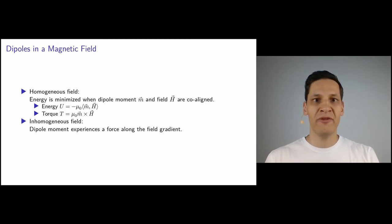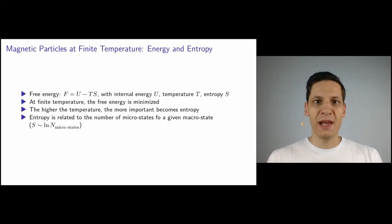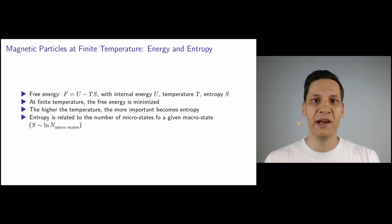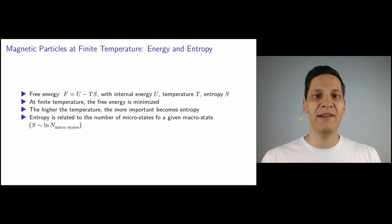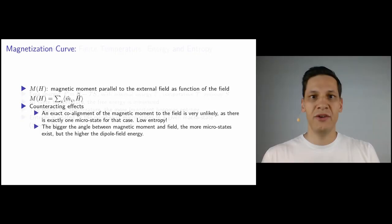Up to this point we have really neglected temperature in the system, so let's see what happens at finite temperature. Thermodynamics gives us that the free energy of a system is given by the internal energy minus the temperature times the entropy. At finite temperature, this free energy term is minimized. With increasing temperature, the entropy S becomes more and more important. The entropy is related to the number of microstates that realize a given macrostate, and this relation is logarithmic, where the proportionality constant is given by the Boltzmann constant.